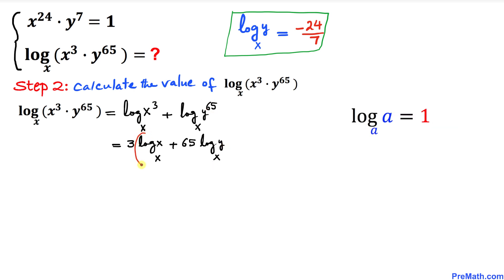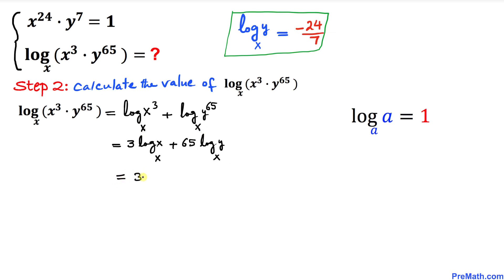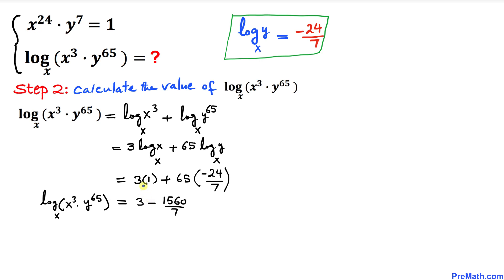We know that log base x of x equals 1, and we already found that log base x of y equals negative 24 over 7. So we can write 3 times 1 plus 65 times negative 24 over 7. Multiplying gives 3 minus 1560 over 7.